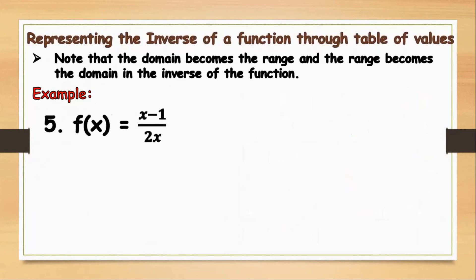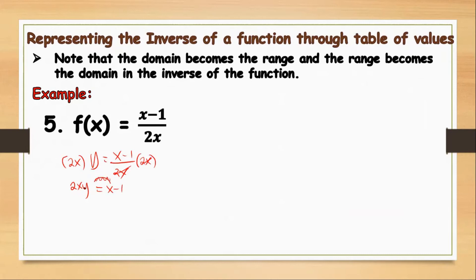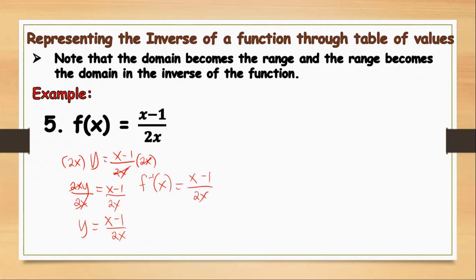Note that the domain becomes the range and the range becomes the domain. We have y equals x minus 1 all over 2x. We multiply both sides by 2x to eliminate the denominator, giving us 2xy equals x minus 1. Then divide both sides by 2x so we only have y on the left. Our y equals x minus 1 all over 2x. So f inverse of x equals x minus 1 over 2x.